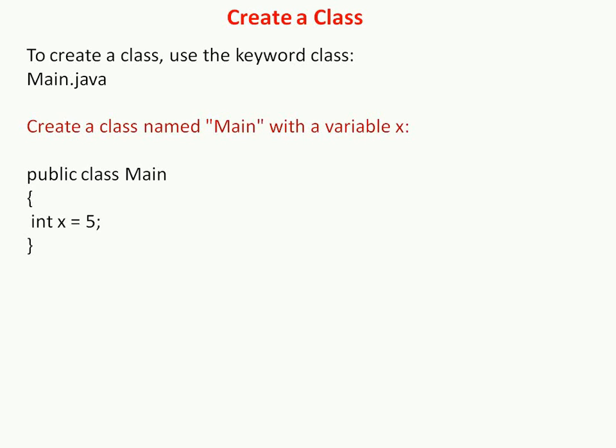How to create a class? To create a class, use the keyword class. Public, private, and protected are the three types of access specifiers in Java, along with the default. We create a class using the keyword class followed by the class name — the first letter of the class name should be capital. Then open a curly bracket, write the methods and attributes, and close with a curly bracket.